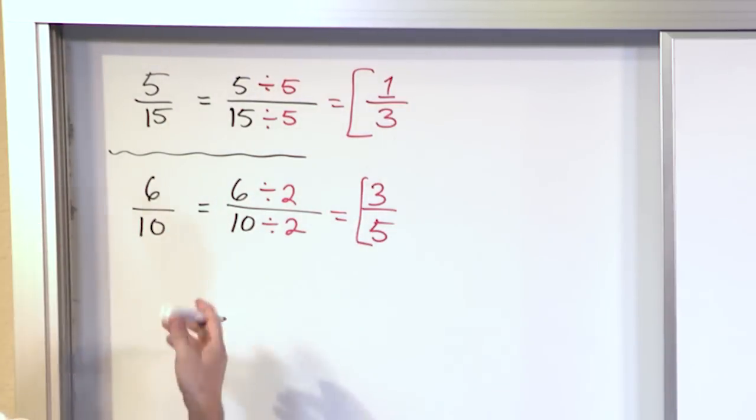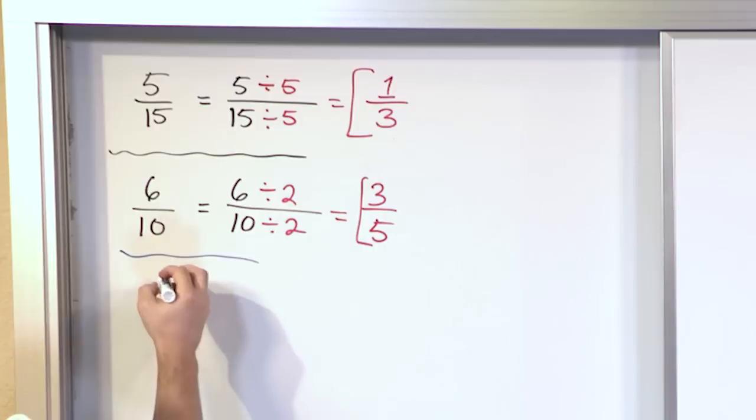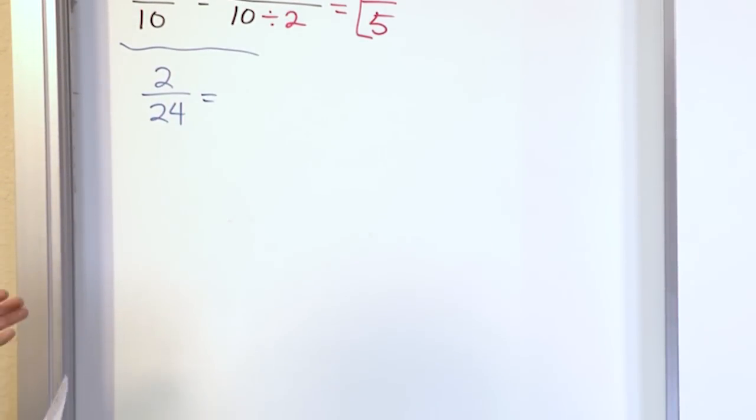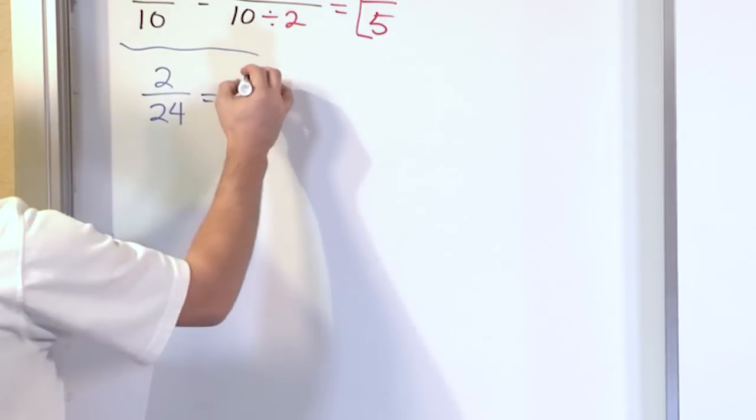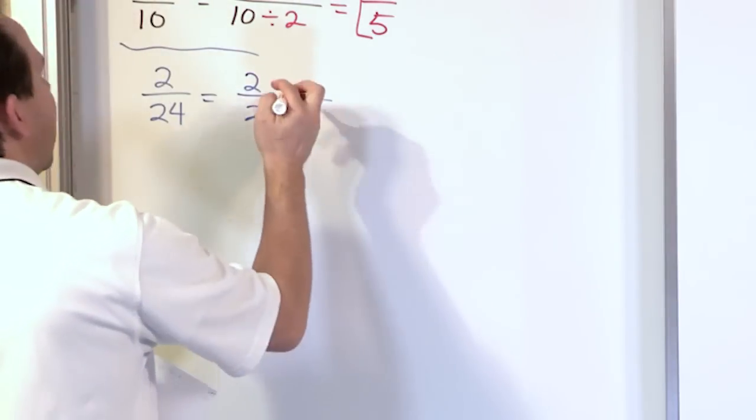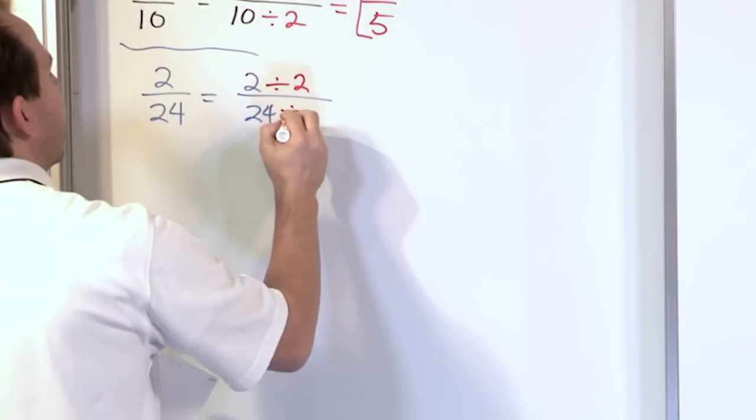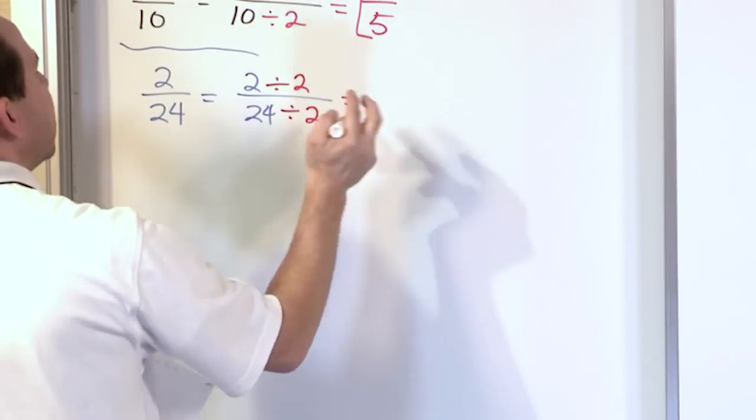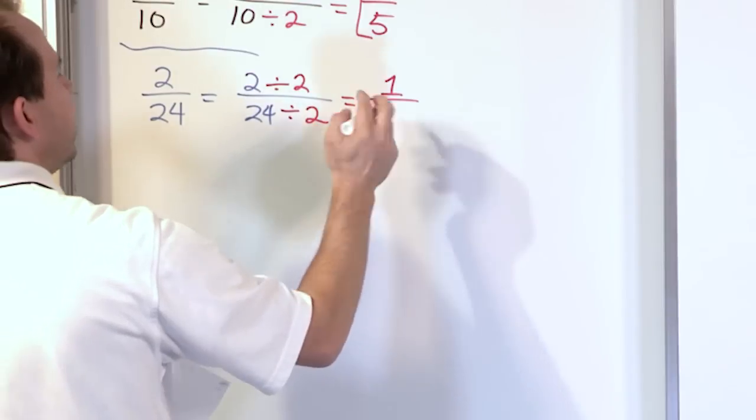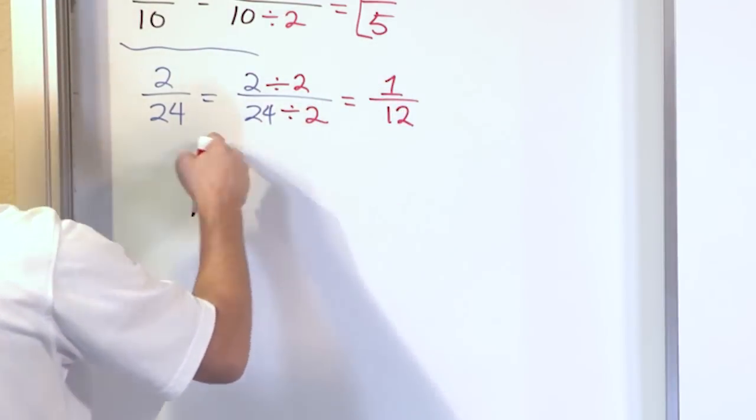Let's switch colors here a little bit just to break it up. What if I have 2 24ths and I want to see is this simplified? It's not simplified because I know I can divide top and bottom by 2 for sure. So I can say 2 24ths and I can divide the top by 2 and the bottom by 2. 2 divided by 2 is 1. 24 divided by 2 if you think about it is actually 12 because 12 times 2 is 24.